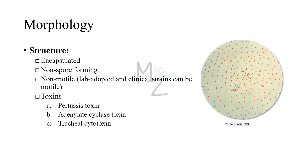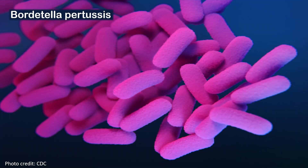Structure: Bordetella Pertussis is an encapsulated bacterium. It is not responsible for forming spores. It is non-motile, though some strains like lab-adapted or clinical strains can be motile. Bordetella Pertussis produces certain toxins: pertussis toxin, adenylate cyclase toxin, and tracheal cytotoxin. Under the microscope this bacterium appears pink colored because it's Gram-negative. Habitat: Bordetella Pertussis is a pathogen only for humans.